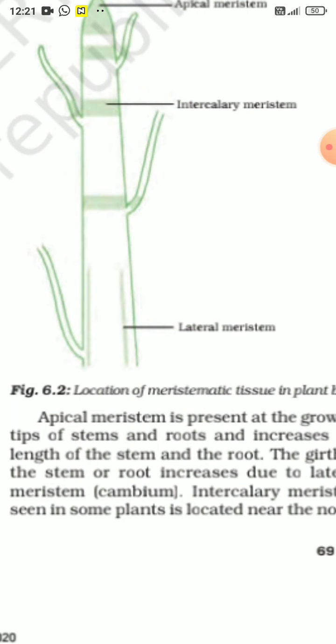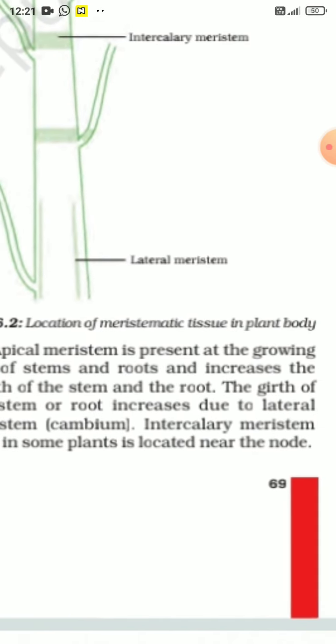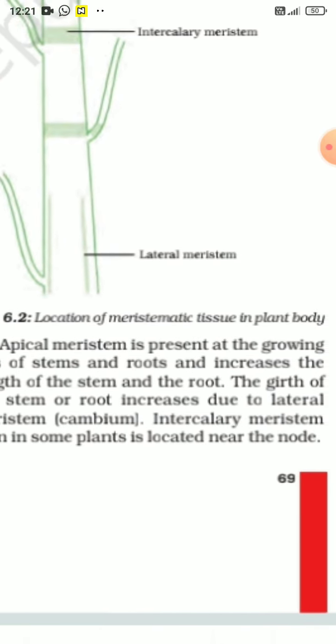So, roots arise? No. Apical Meristem Tissue is present. How will growth be? So, growing tips are at stem and roots. You can see stem is longer and longer. Roots are longer and longer. So, this is Apical Meristem, and it increases the length of the stem and roots.